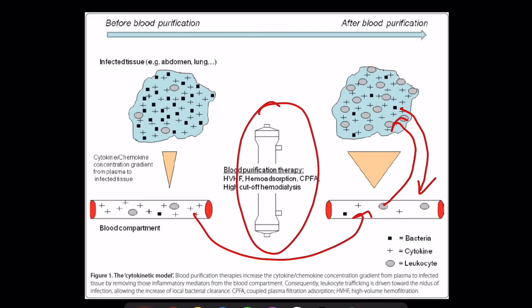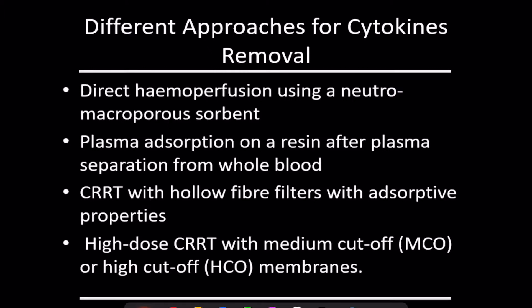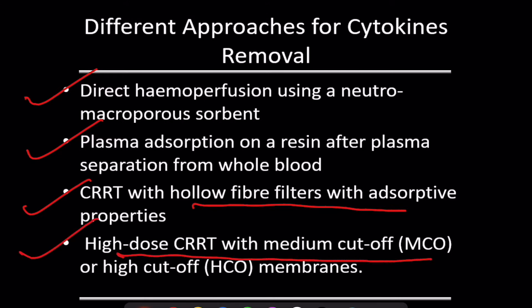The approaches present for reducing cytokines are: direct hemoperfusion, plasma absorption, CRRT with hollow fiber filters with absorptive properties, and high-dose CRRT with medium cutoff or high cutoff membranes.